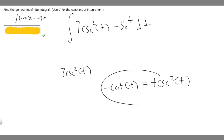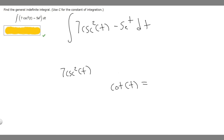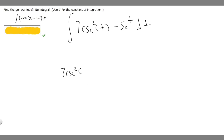We basically just negate both sides. So the antiderivative of cosecant squared of t is minus cotangent of t. And then we're multiplying by 7, so the antiderivative of 7 times cosecant squared of t is minus 7 times the cotangent of t.